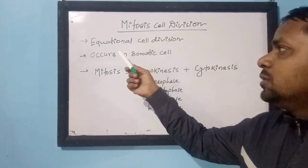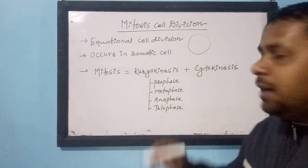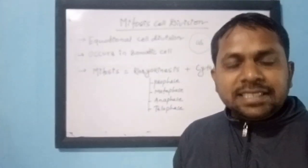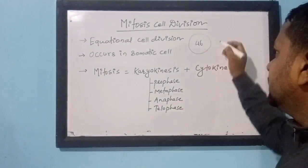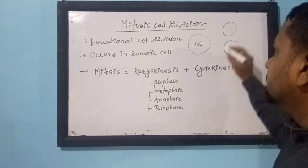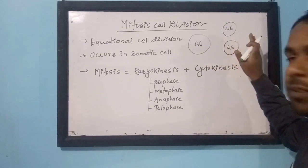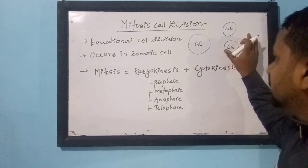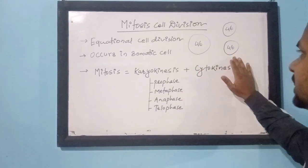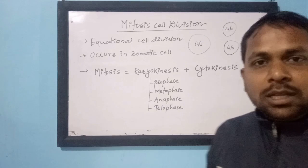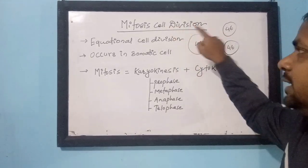Mitosis cell division is also called equational cell division. Suppose we have a human cell with 46 chromosomes. When this cell divides, the newly formed daughter cells also contain 46 chromosomes — equal to the original mother cell. That type of cell division is called equational cell division.